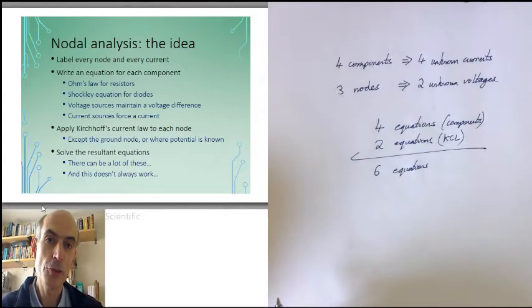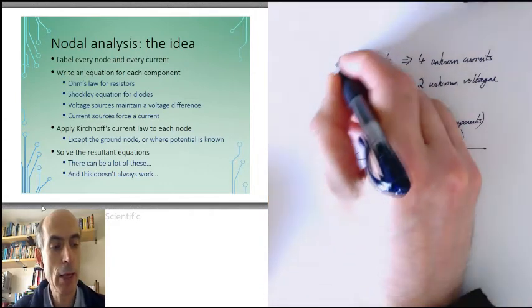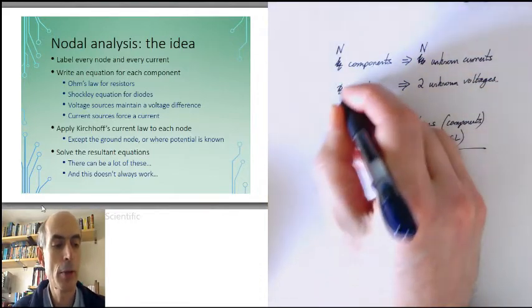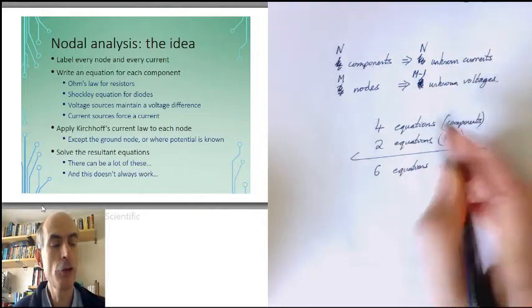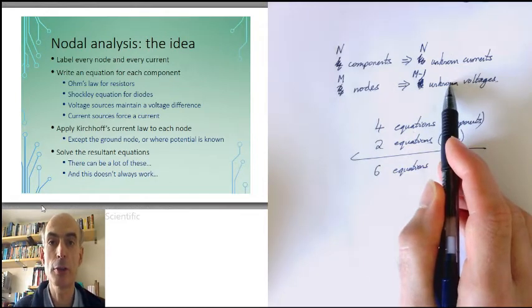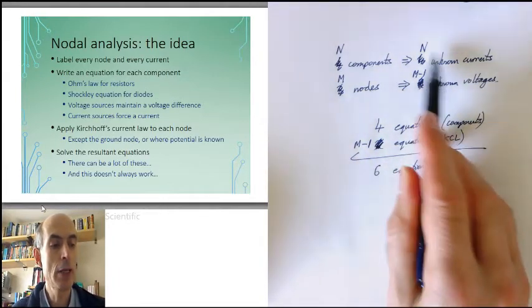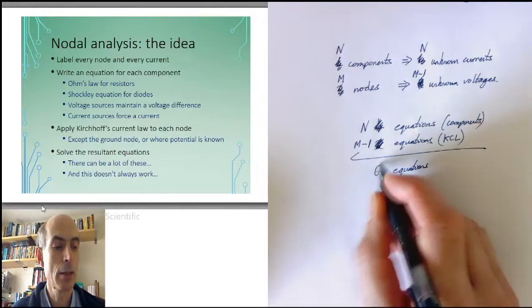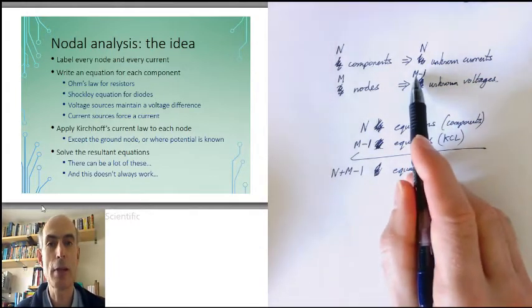If you have n unknowns and n equations, you can usually solve them. This always works. Supposing we had n components, that would give us n unknown currents. Supposing there were m nodes in the circuit, one of which was at ground, that would give us m minus one unknown voltages in our circuits. At each of these unknown voltages, we can apply Kirchhoff's current law. That will give us m minus one equations from Kirchhoff's current law. And for each of these unknown currents, we can apply an equation that comes from the behavior of the components, ending up with n plus m minus one simultaneous equations to solve for n plus m minus one unknowns.